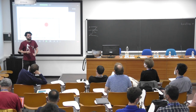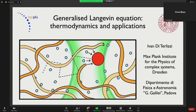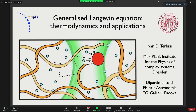I'm Ivan Di Terlizzi. I'm currently a postdoc at the Max Planck Institute for the Physics of Complex Systems in Dresden. First of all, I would like to thank the organizers for letting me talk about this work, which I carried out during my time as a PhD student in Padova under the supervision of Professor Marco Baiesi. My work is about the generalized Langevin equations and mostly about their thermodynamic properties.